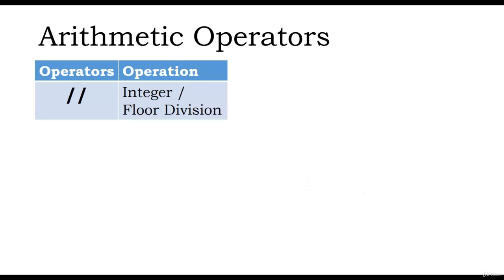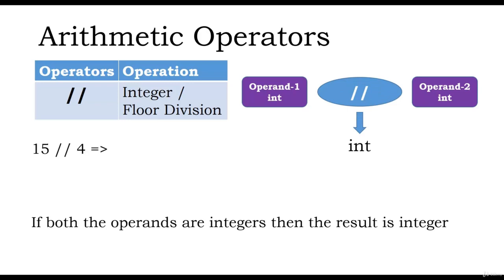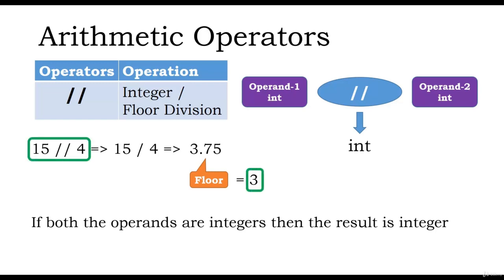Now we will look at the integer division operator. In Python, we can use double slash for integer division. If both the operands are integers, then the result is an integer. Integer division first performs the normal division, then the floor operation is applied to the result — hence it is also referred to as the floor division operator. For example, consider 15 floor division 4: first 15 divided by 4 gives 3.75, then the floor of 3.75 is 3. Therefore, the result of 15 integer division 4 is 3.